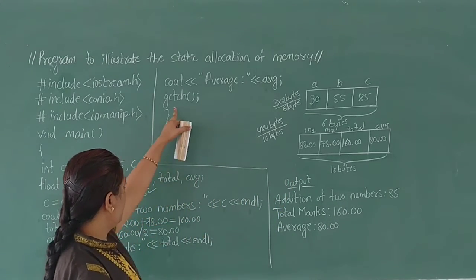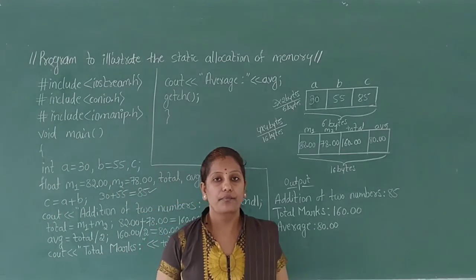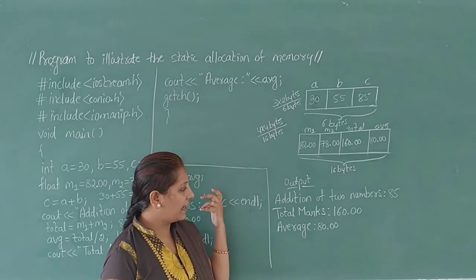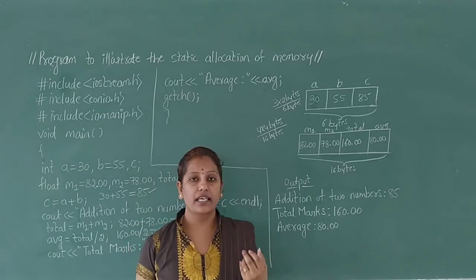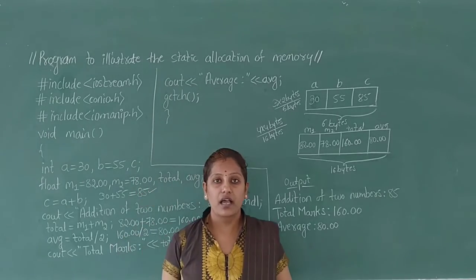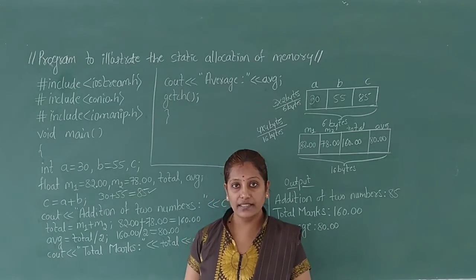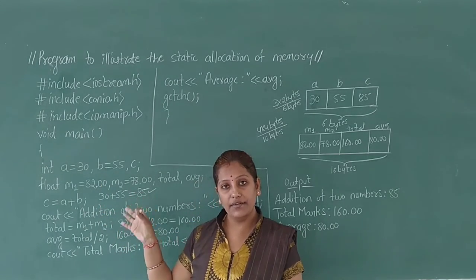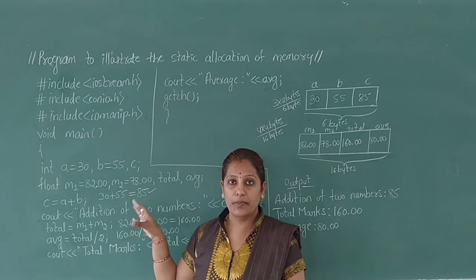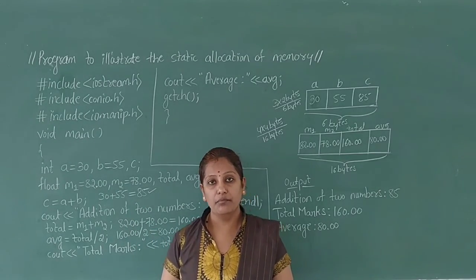The program gets a character value and ends execution of the main function. This is the final output of the program. This program illustrates static allocation of memory — allocating memory space for declared variables at the time of compilation itself. When variables are declared with a data type, using that data type it reserves the specified memory spaces for a variable at the time of compilation.